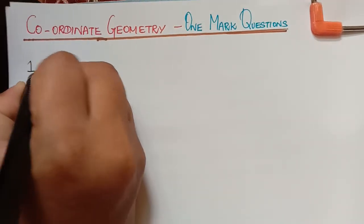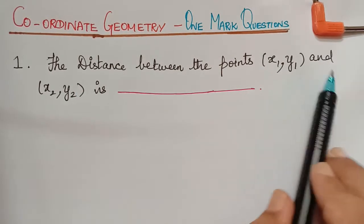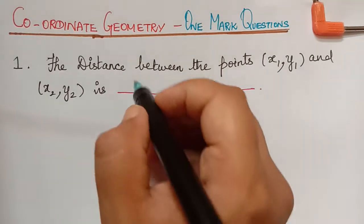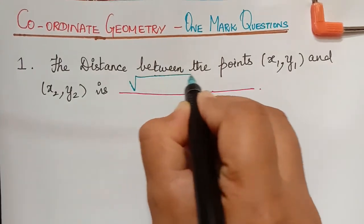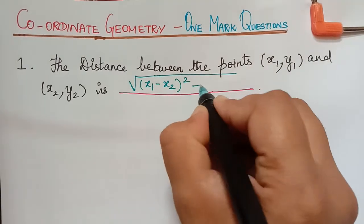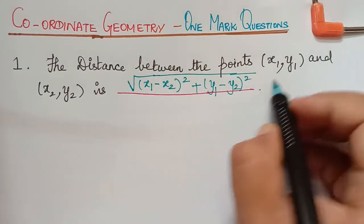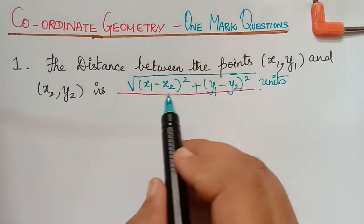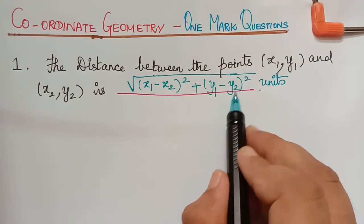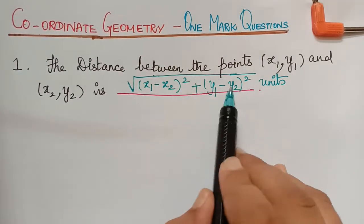The first question is: the distance between the points x1 comma y1 and x2 comma y2 is dash. We have to use the distance formula, which is given by square root of (x1 minus x2) whole square plus (y1 minus y2) whole square. This can also be written as (x2 minus x1) whole square plus (y2 minus y1) whole square, because we are squaring it either way.